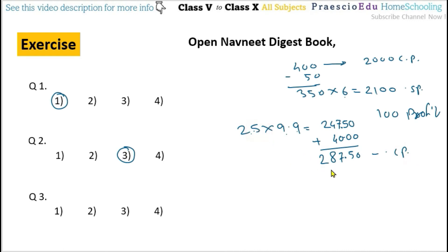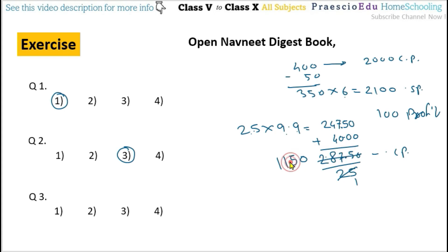Now we have to find the price of each cap, so we divide by 25. 287.50 divided by 25: working through the division gives us 11.50. So rupees 11.50 is the price of one cap, and this is given in option number 2.